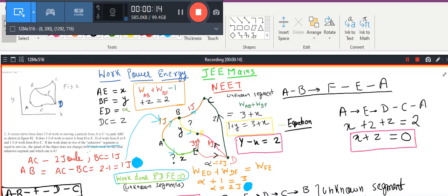If you see, you have a graph in which a body is moving under the influence of conservative force and it is given that the work done when it moves from A to C is 2 joules. And when it moves from D to F, the work done is 1 joule. And when it moves from E to F, another 1 joule of work is done. And also, for B to C, it is known that the work done is 1 joule.